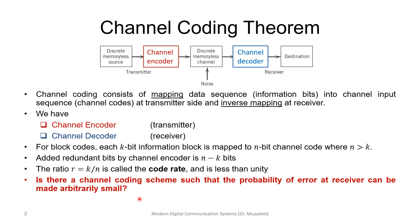So the question is: Is there a channel coding scheme such that the probability of error at the receiver can be made arbitrarily small? This is the criteria—we want to design a code that reduces the probability of error.